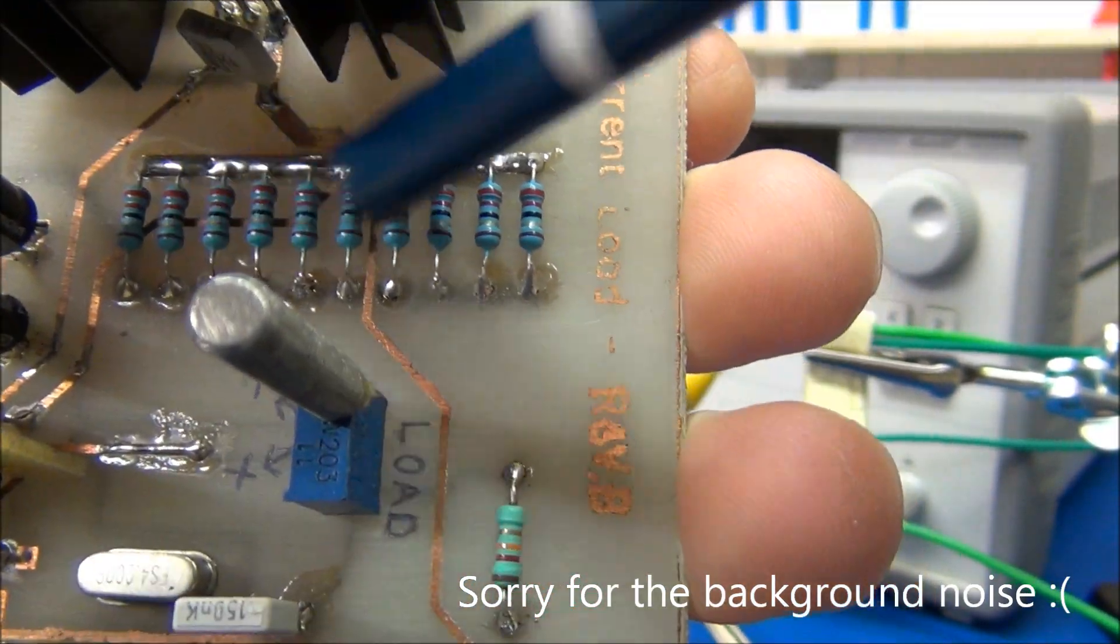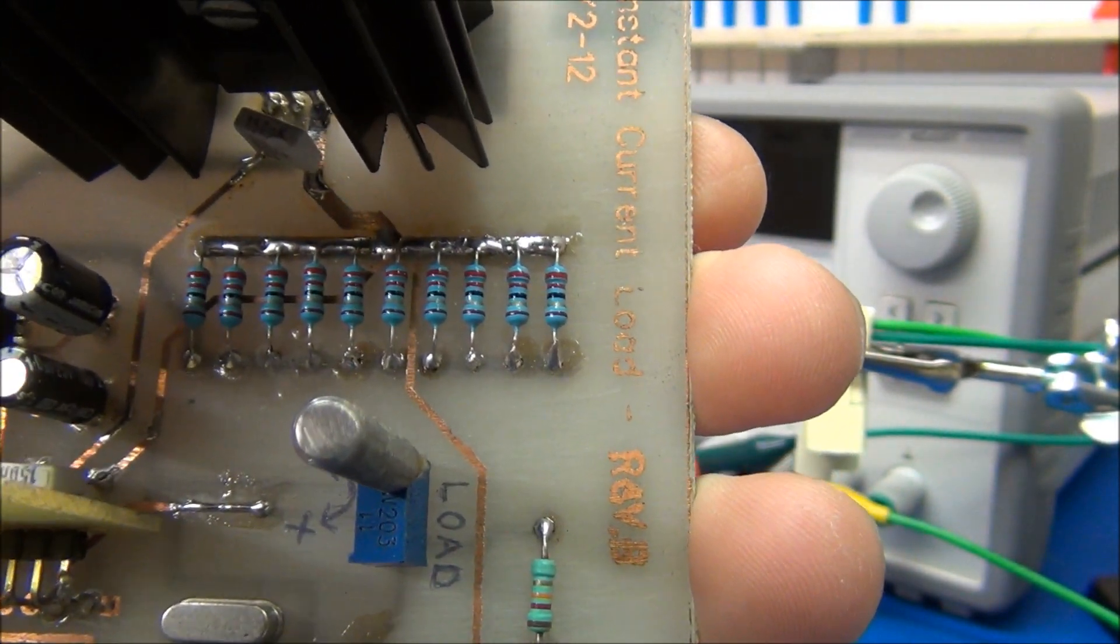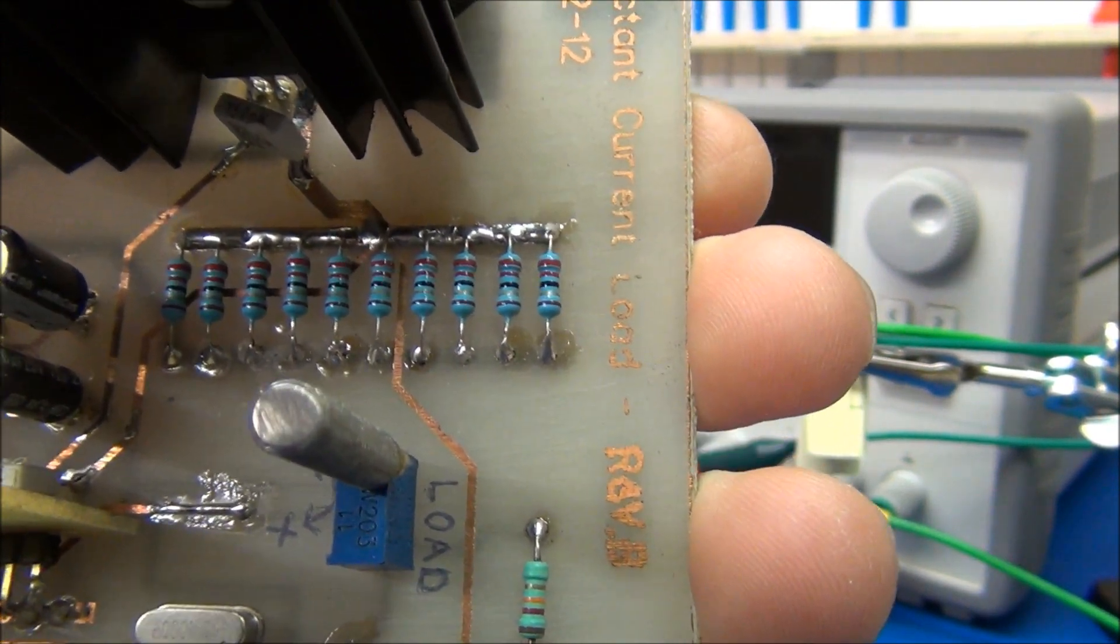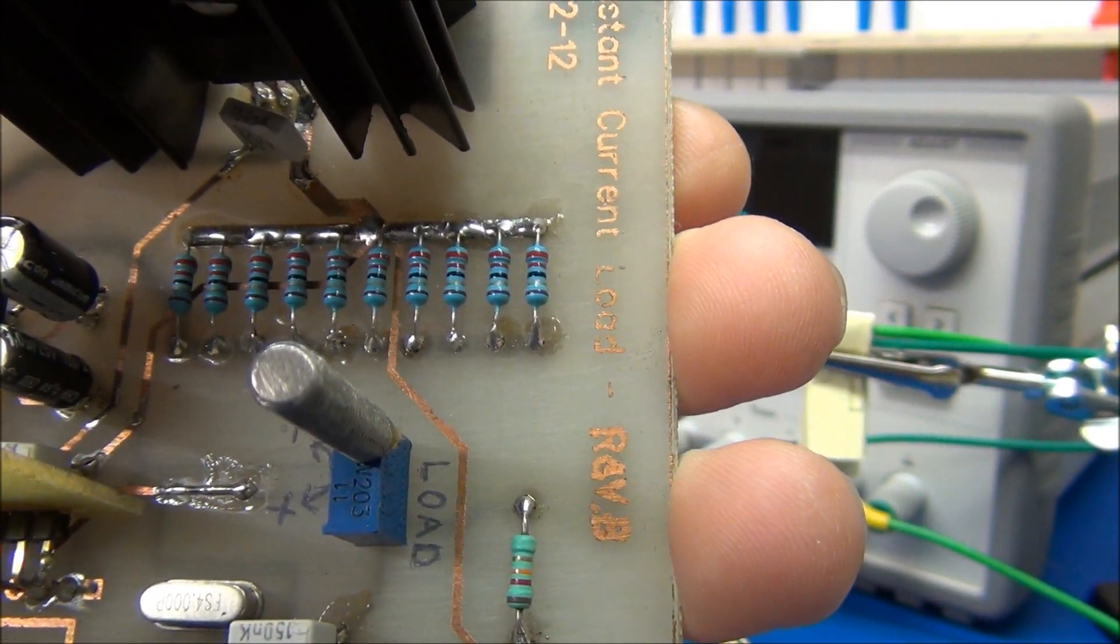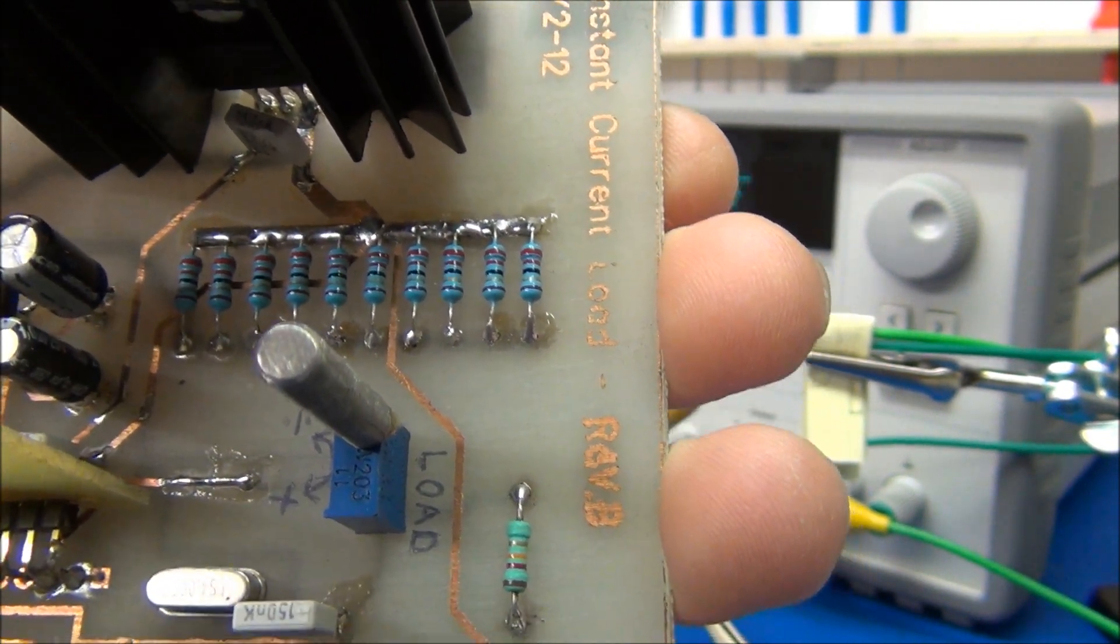So these are 10 quarter watt resistors, and when this is operating at full current it will dissipate 2.5 watts. They should handle that, but the temperature is rising quite significantly.